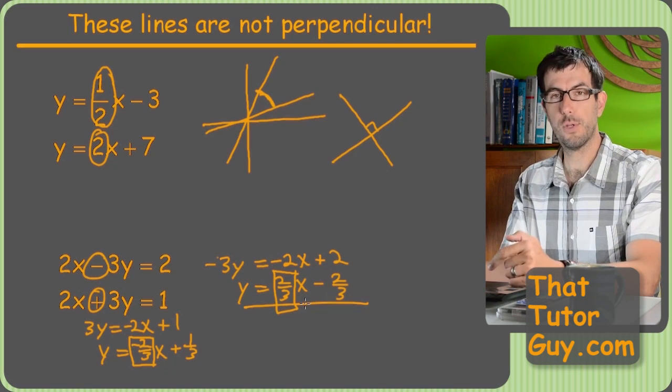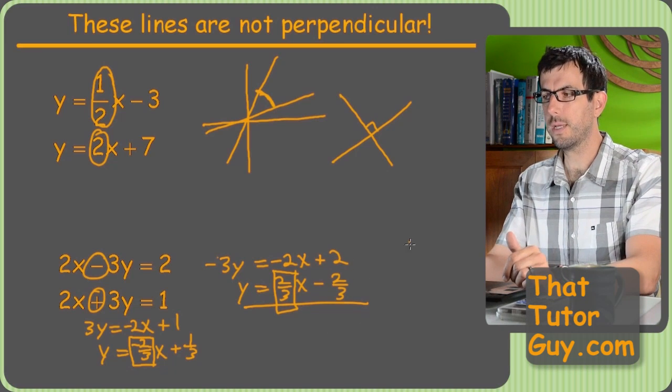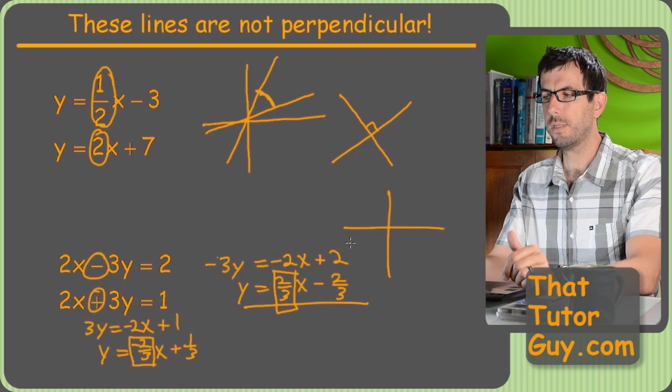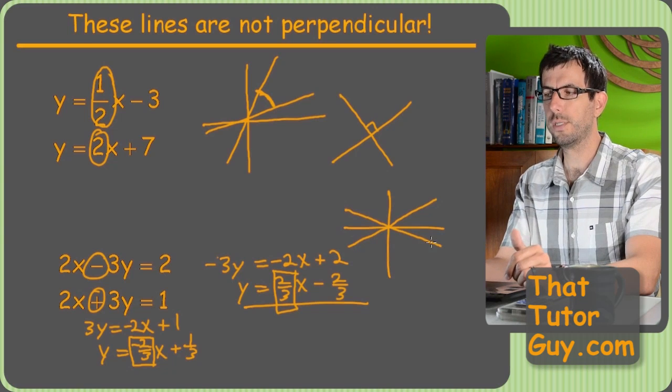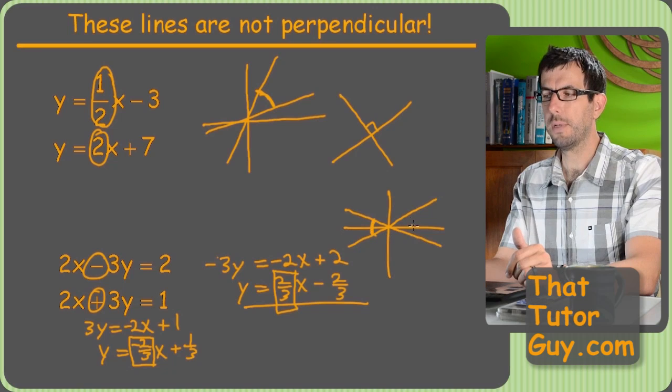But positive two-thirds and negative two-thirds, just because they're negatives, does not make them perpendicular. And if you graph these two lines, what you would get is that two-thirds, positive two-thirds is kind of a gradual up to the right, and negative two-thirds is the same gradual, only down to the right. And these are not perpendicular.